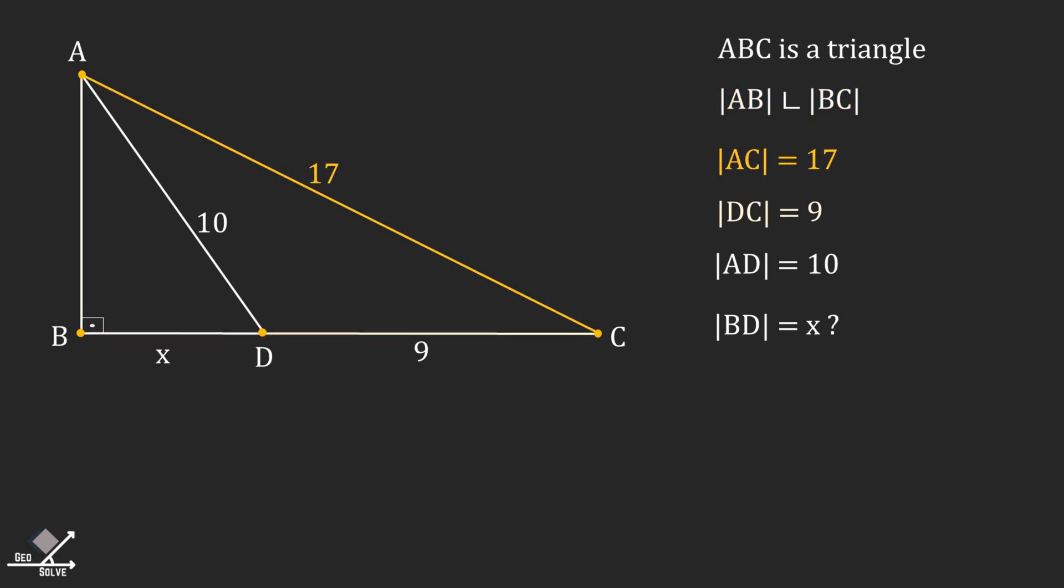Line AC is 17 units, line DC is 9 units, line AD is 10 units, and the question asks the length of line BD, which is x. If you want to try it yourself, pause the video here and unpause for the solution.